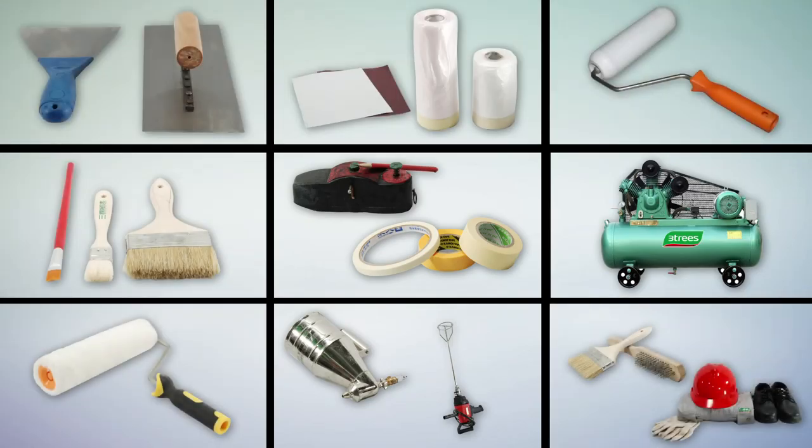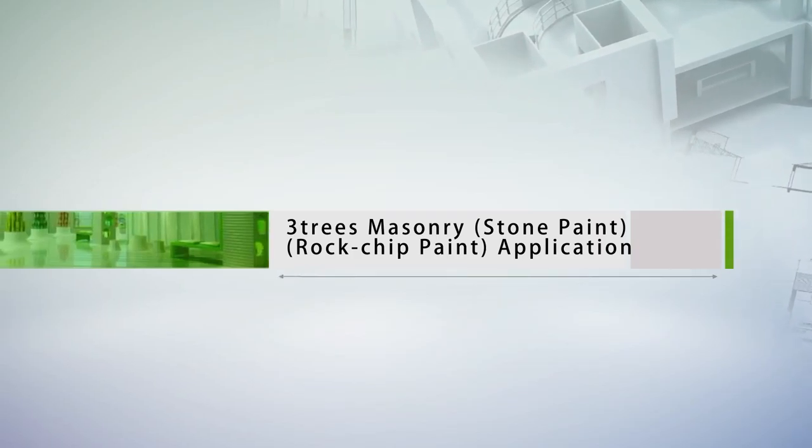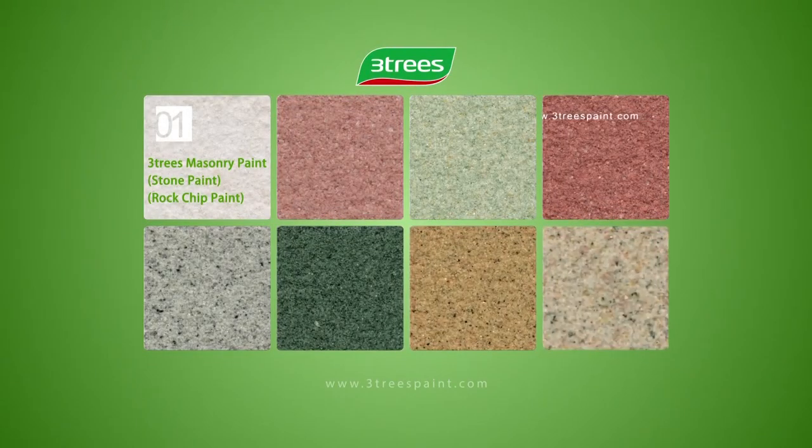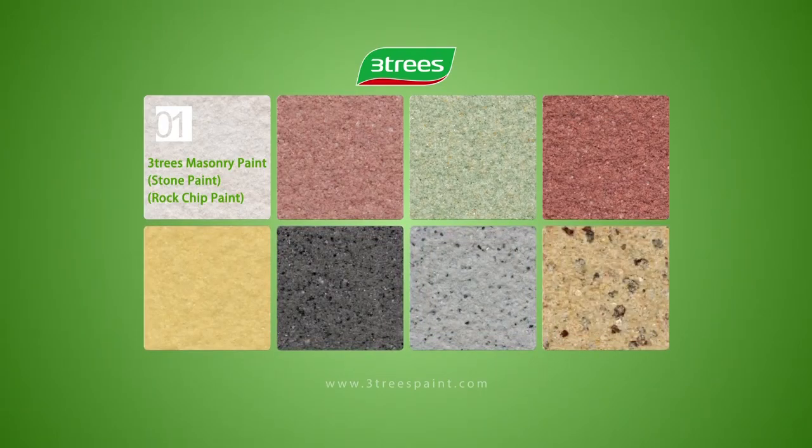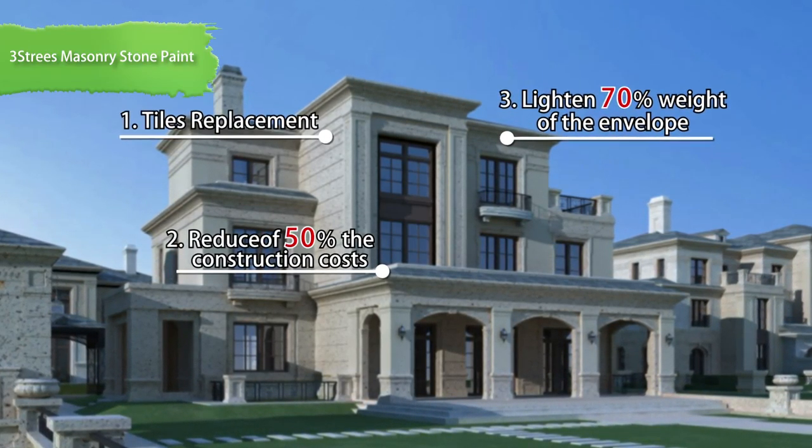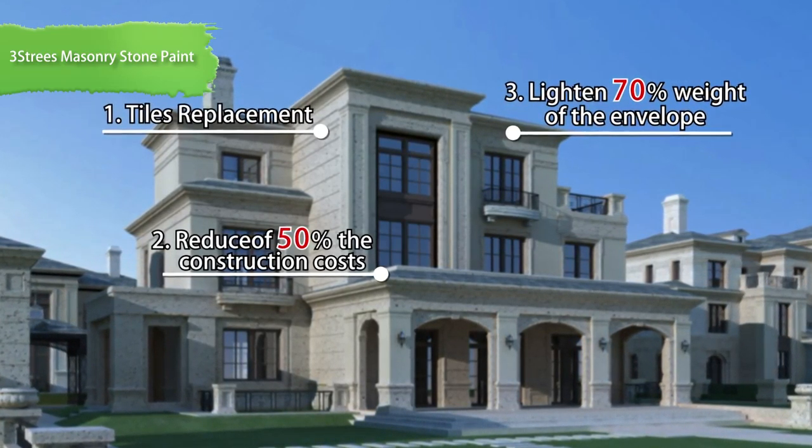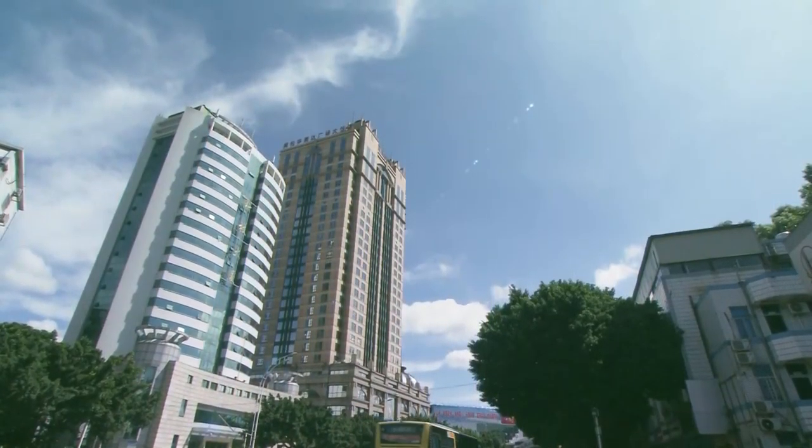The following introduction is in accordance with the series of products. Three Trees Masonry Stone Paint Rock Chipped Paint is prepared by various colors of natural stone powder. The decoration effect is just like marble, granite with the same attribute of real stone.